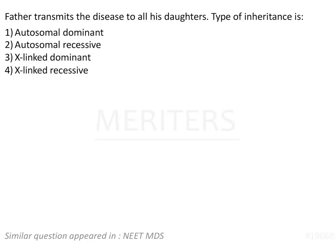Father transmits the disease to all his daughters — identify the type of inheritance. The options are autosomal dominant, autosomal recessive, X-linked dominant, and X-linked recessive.